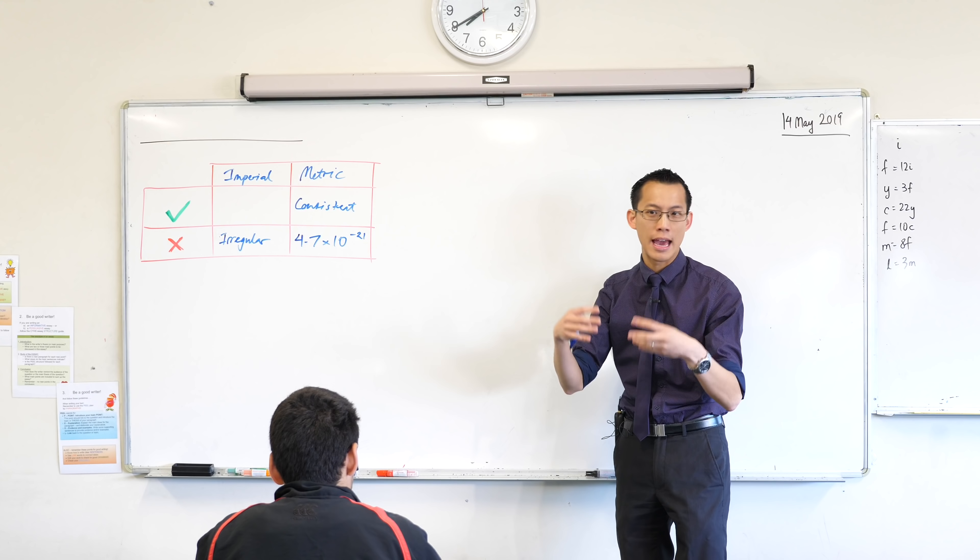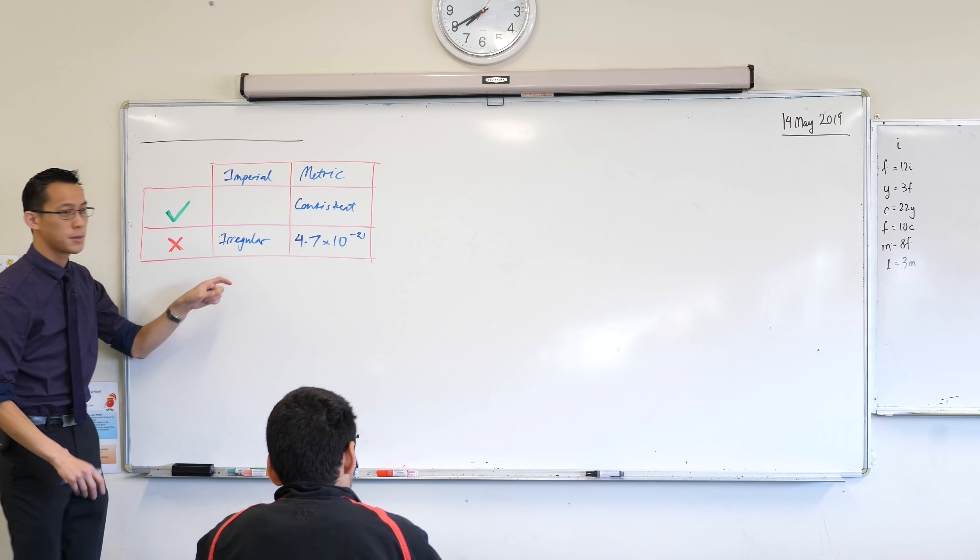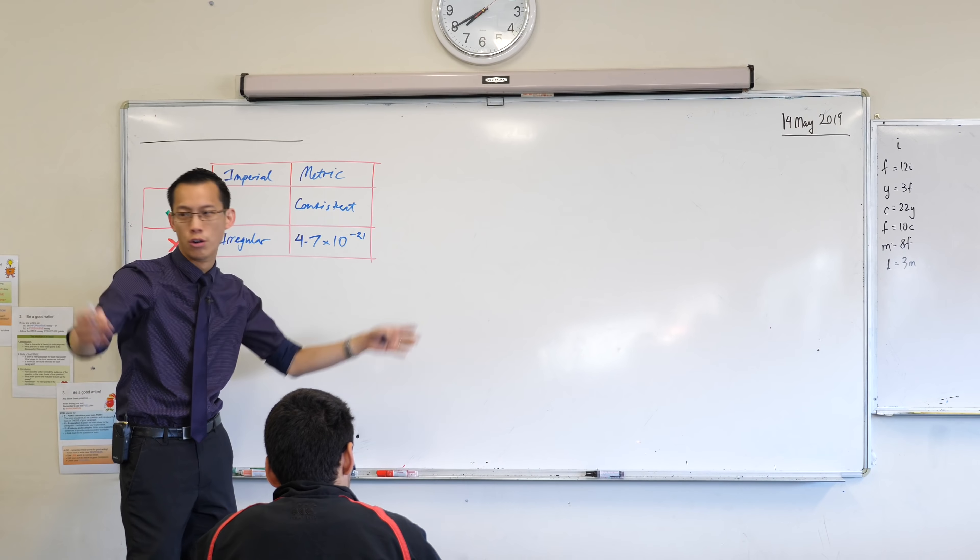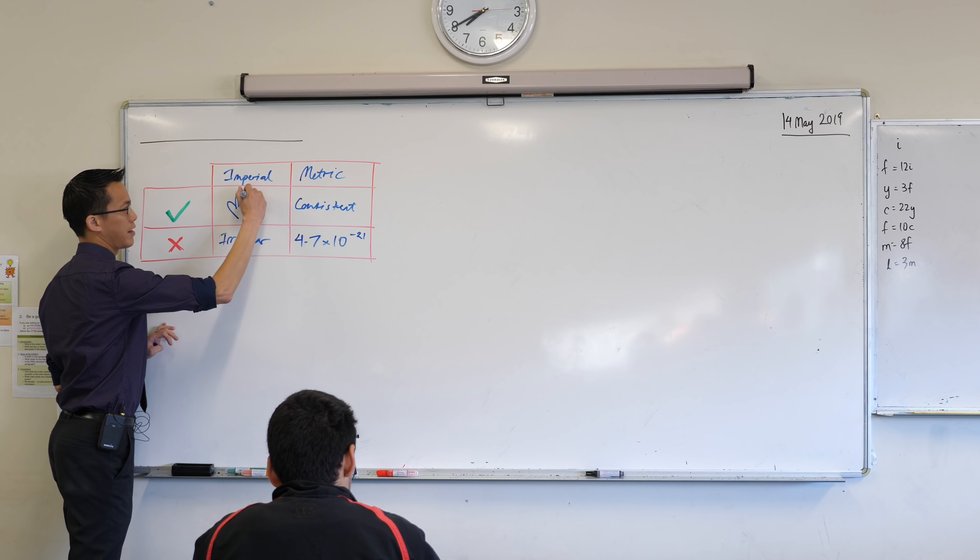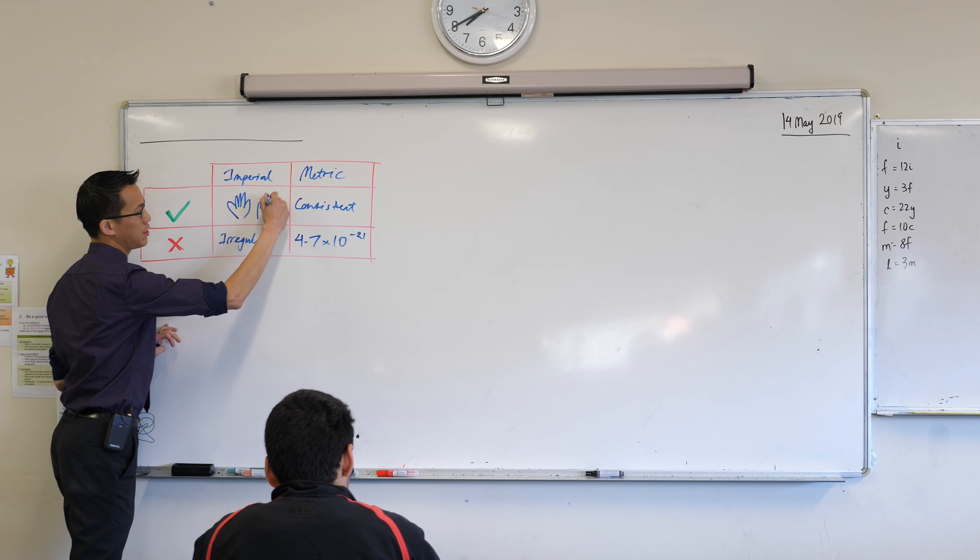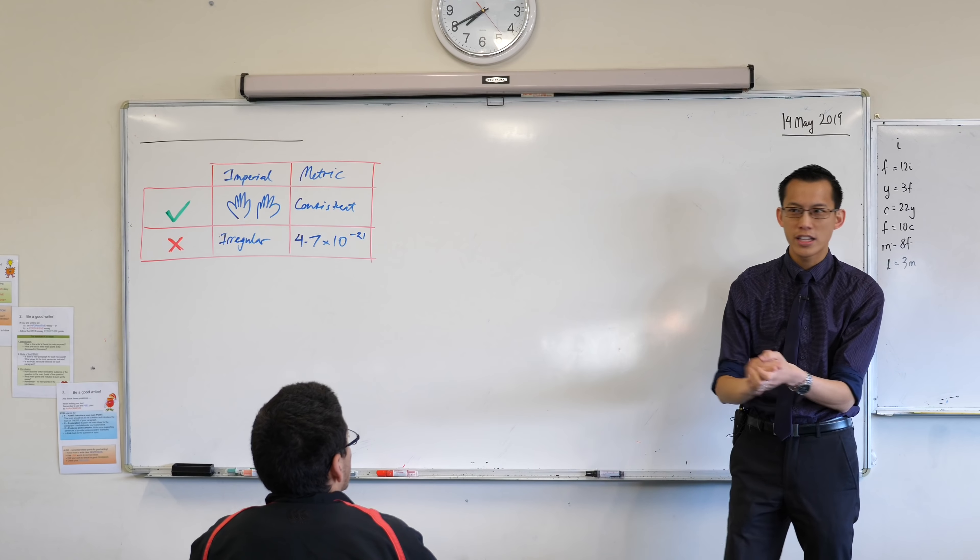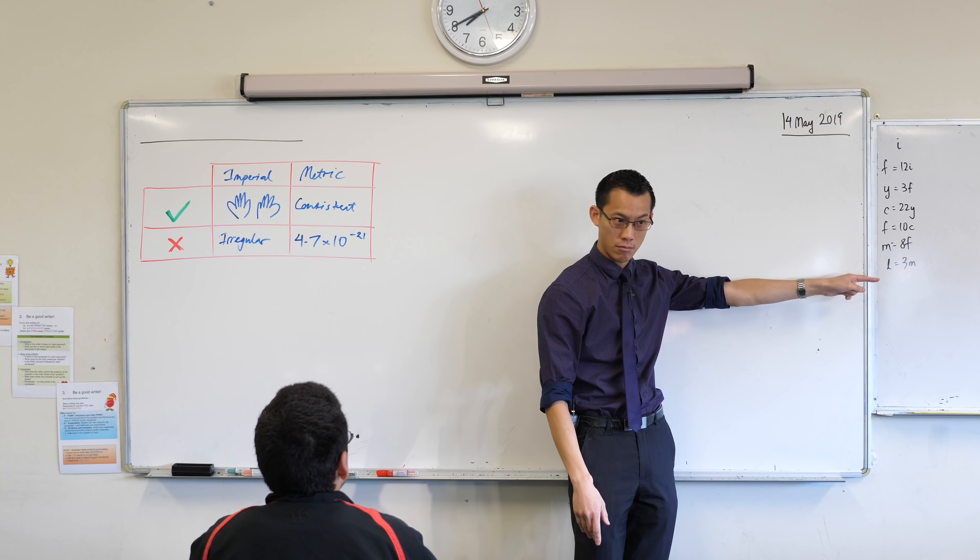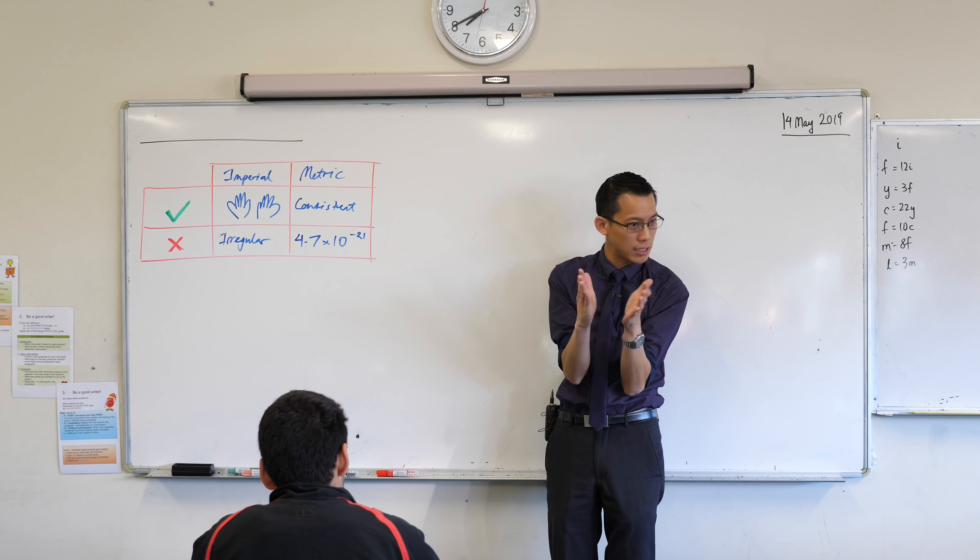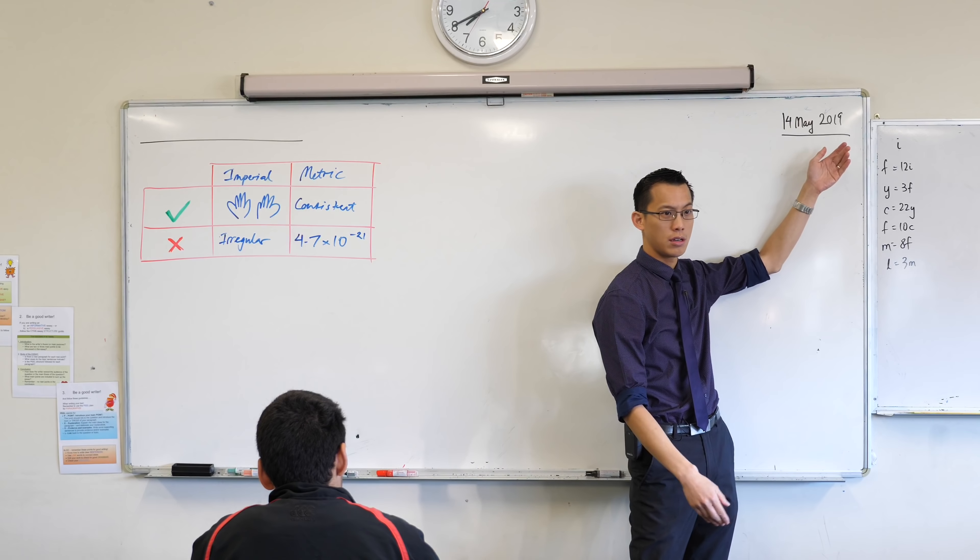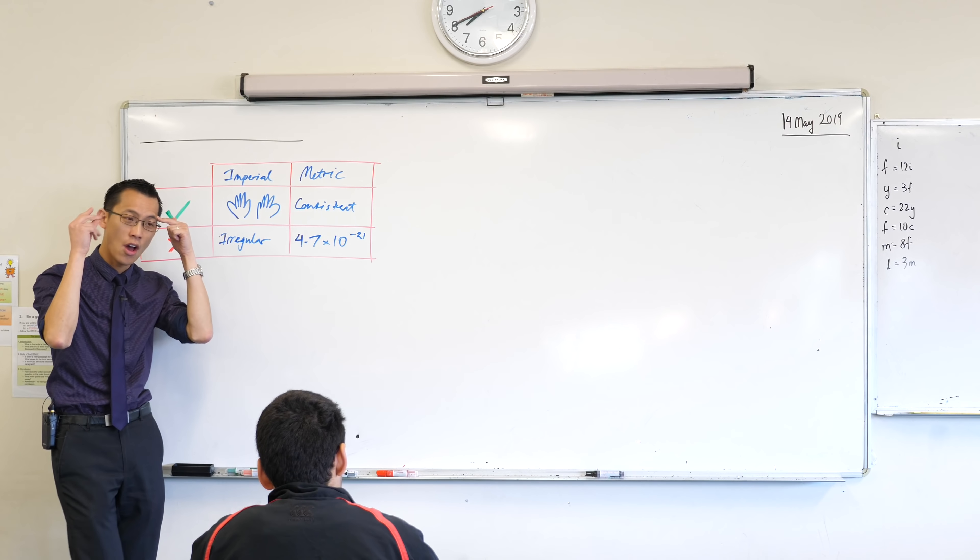Now here's the thing right, and you guys haven't, like me, haven't experienced this personally but you can see it even here on the board right. The great strength of the imperial system is no matter what distance you're talking about or no matter what weight or things like that right, pretty much everything you can deal with. Everything you're going to deal with, any length, any weight, you can deal with on an order of magnitude. You can say how long is that, it's about seven of these, you just pick the appropriate unit right, or it's about three of these. And you never have to deal with crazy insane huge numbers or really really tiny numbers.